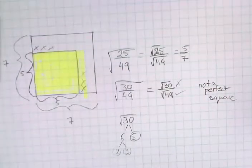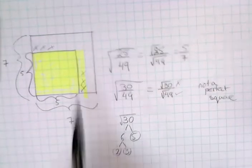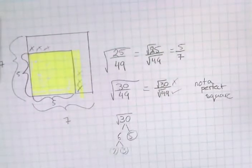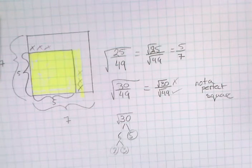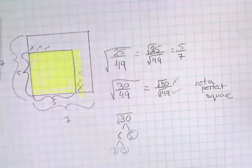Basically, what this diagram showed us is: all we need to do is square root the denominator and square root the numerator. And if we square root both of those and they are both perfect squares, then my fraction is a perfect square.